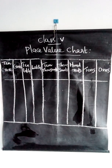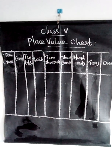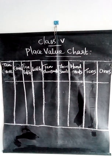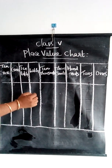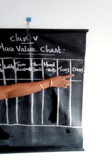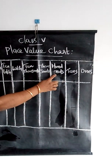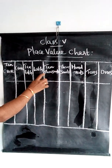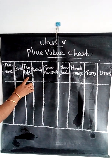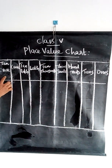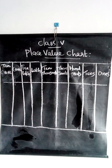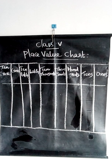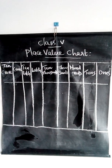You already studied about place values in the lower classes. Place values are: ones, tens, hundreds, thousands, ten thousands, lakh, ten lakh, crore, ten crore, and so on. If we arrange these in a table, that is known as a place value chart.